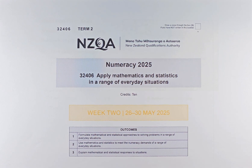Good day! In this video, we are going to try and solve question 5 of the 2025 Term 2 Week 2 NCAA exam. The numeracy exam, also called the CAA exam, is titled 'Apply Maths and Stats in a Range of Everyday Situations.' This is the level one unit standard, which means you either get achieved or not achieved.